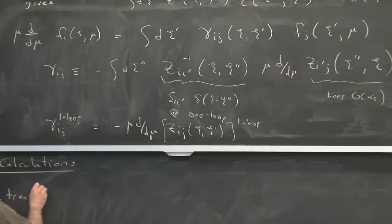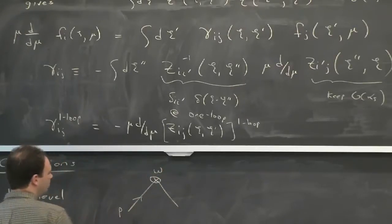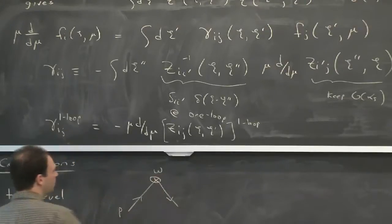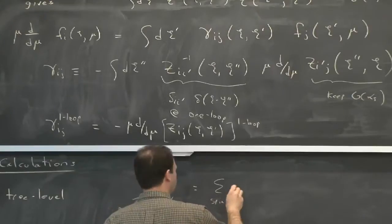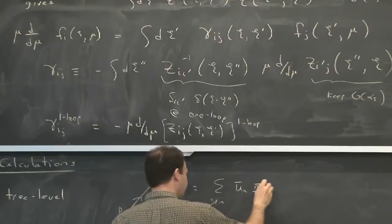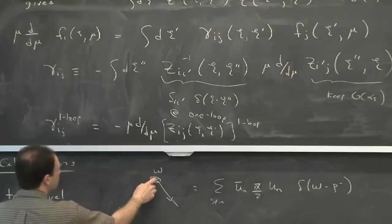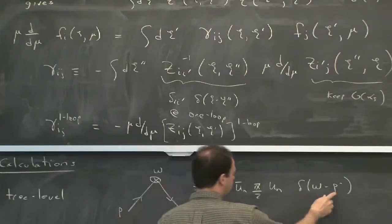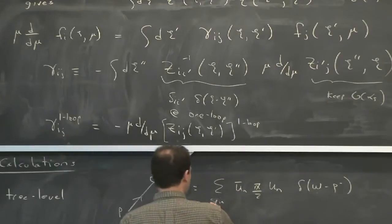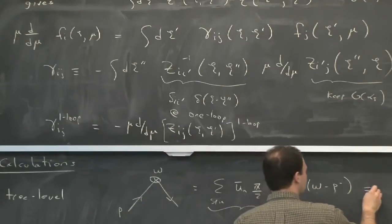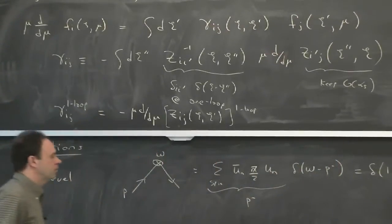Tree level: think about there being an external momentum p for whatever state I'm considering, and the operator is labeled by omega. Summing over spin, we get some spinors and a delta function. The delta function in the operator is delta of omega minus the label momentum p-bar. For a single state, it's just the momentum of that state p. The sum over spin gives a p-minus, so the result is a delta function of 1 minus omega over p-minus.